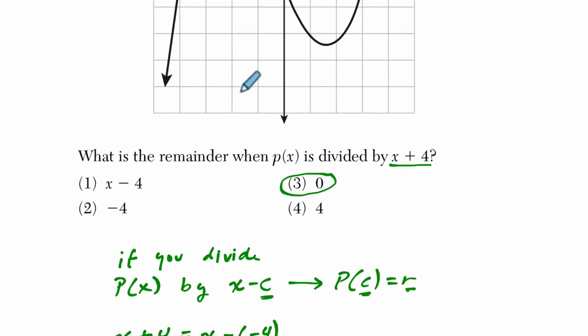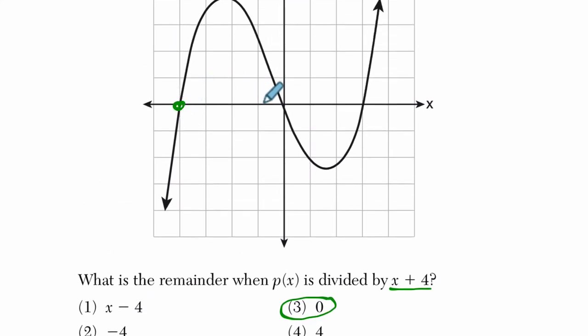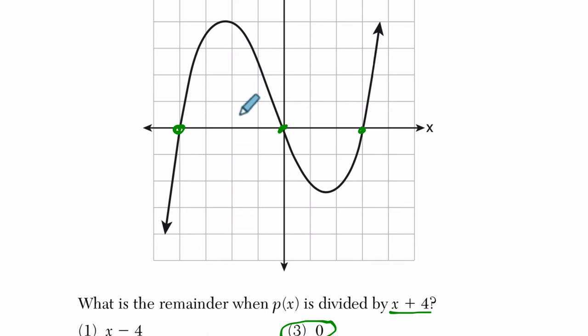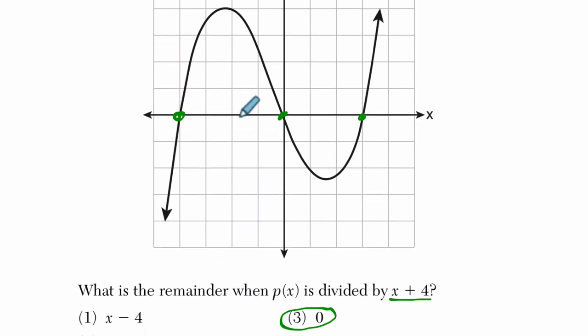And that makes sense because these points are based on the factors of this function. And factors of a function have no remainder. By definition, that's what a factor is. Like 2 is a factor of 6 because it goes into 6 evenly three times. There is no remainder when you're dividing by a factor.